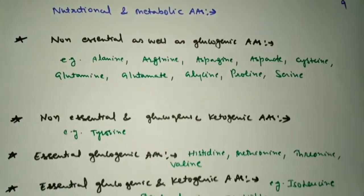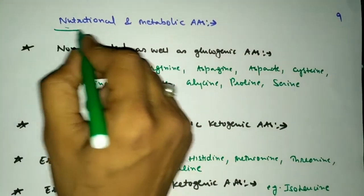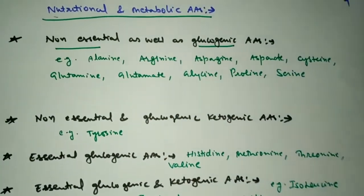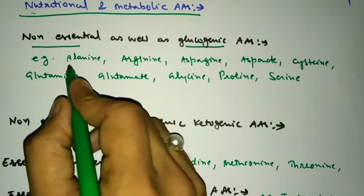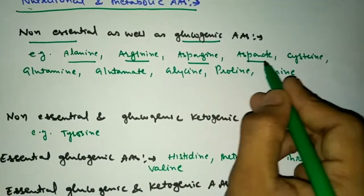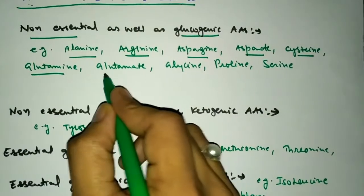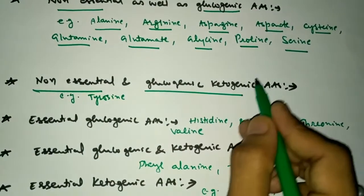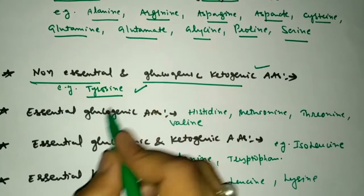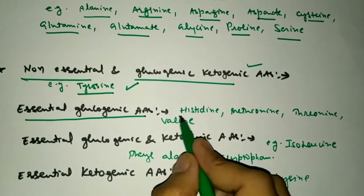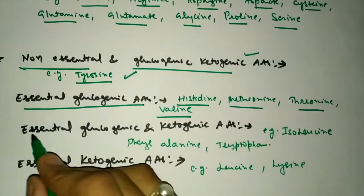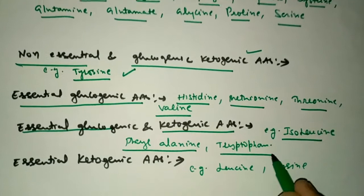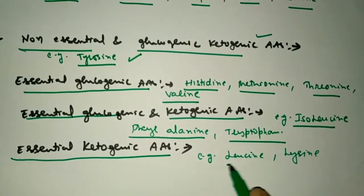To summarize the complexity of the metabolic classification: non-essential and glucogenic — alanine, arginine, asparagine, aspartate, cysteine, glutamine, glutamate, glycine, proline, and serine. Non-essential, glucogenic, and ketogenic — tyrosine only. Essential glucogenic — histidine, methionine, threonine, and valine. Essential glucogenic and ketogenic — isoleucine, phenylalanine, and tryptophan. Essential ketogenic — leucine and lysine.